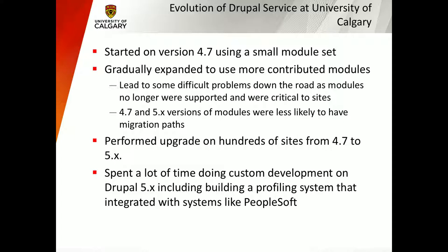So the evolution of U of C — how we got started to where we are now. We started in version 4.7, pretty early days for a more stable Drupal build. When we started on 4.7, we were using very small modules — basically core plus one or two modules. We had some system administrators running things through the server at the time since Drupal was just one piece of their pie. When the first few sites were done, we wanted to get some contributed modules on and have some fun — let's look at the modular approach Drupal provides.